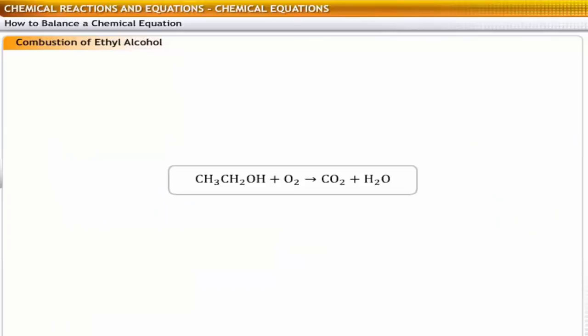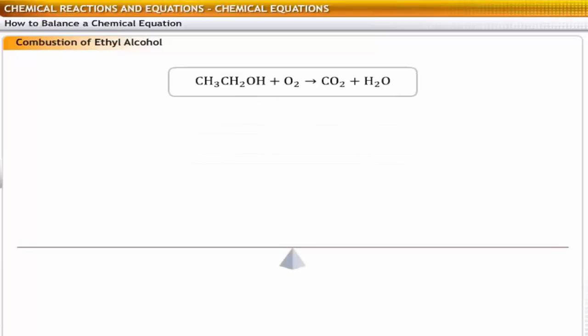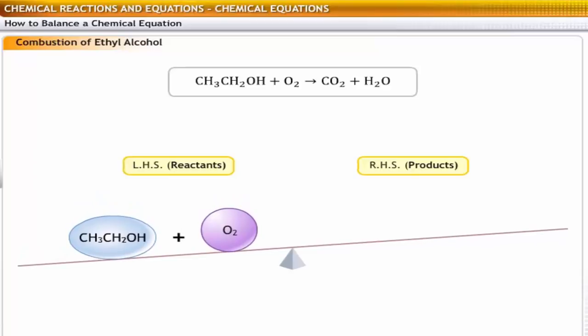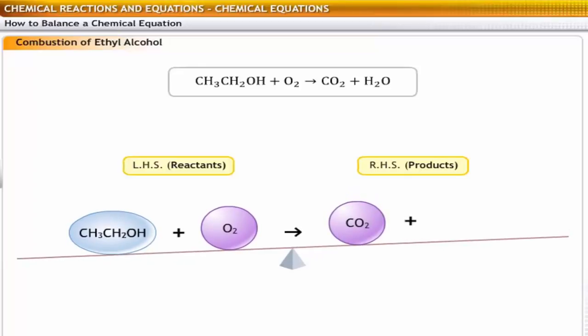Let's practice further on balancing equations with another example. This equation deals with the combustion of ethyl alcohol. Again, the first step is to identify the reactants and the products. Here, ethyl alcohol and oxygen are the reactants and they are written on the left-hand side of the equation. The products on the right-hand side are carbon dioxide and water.